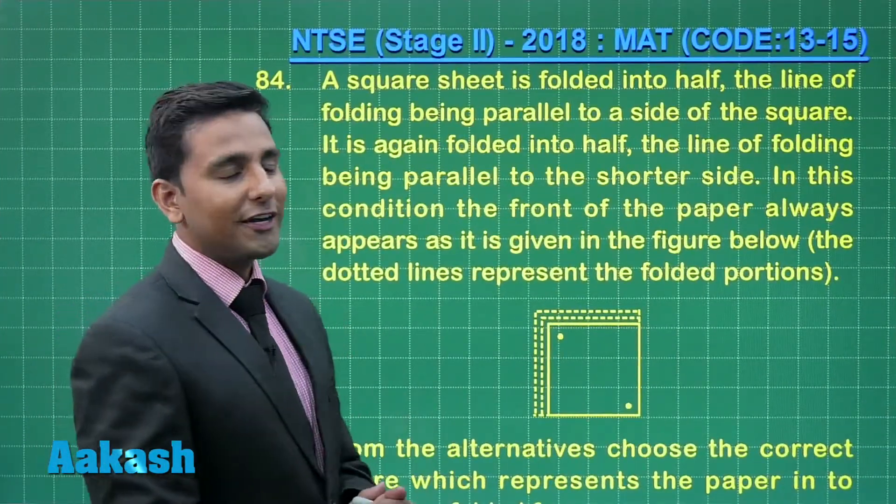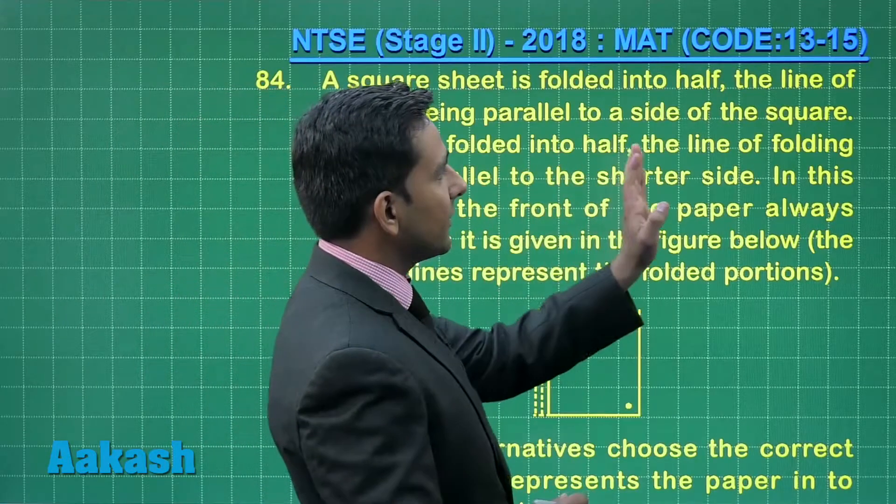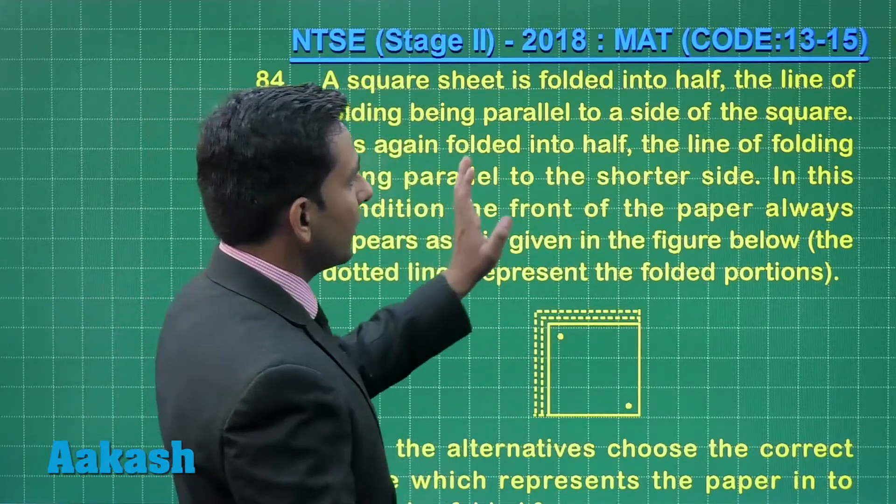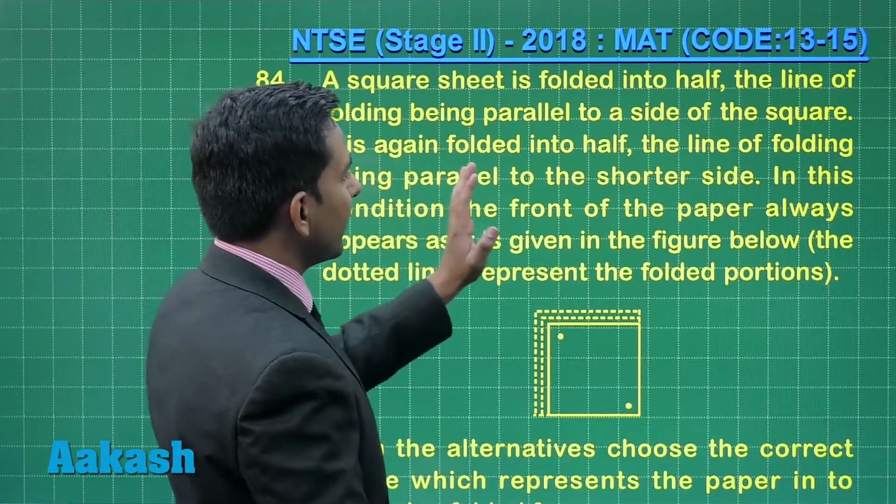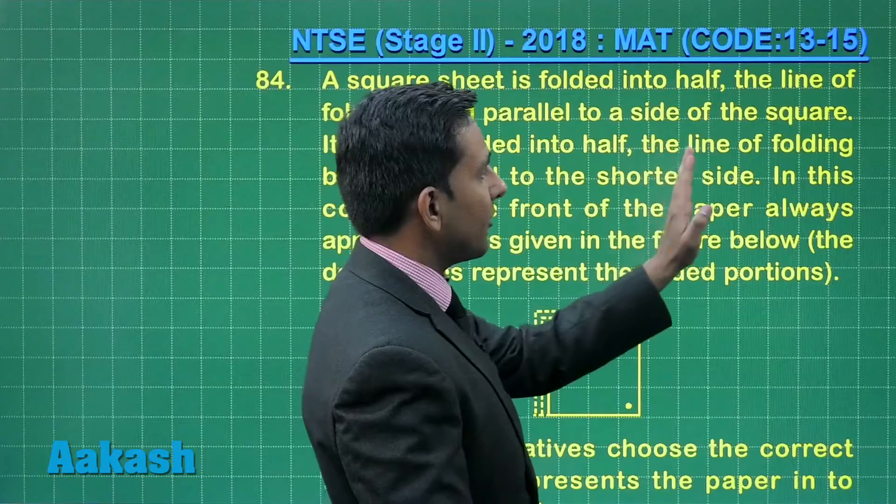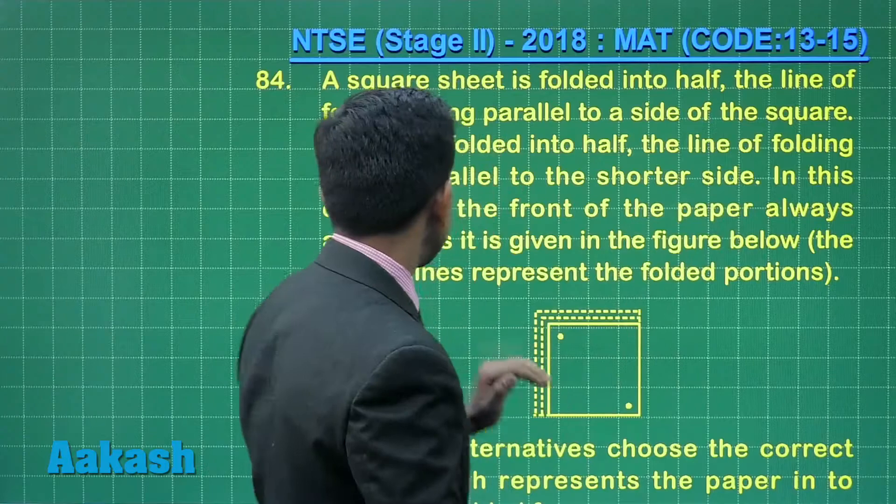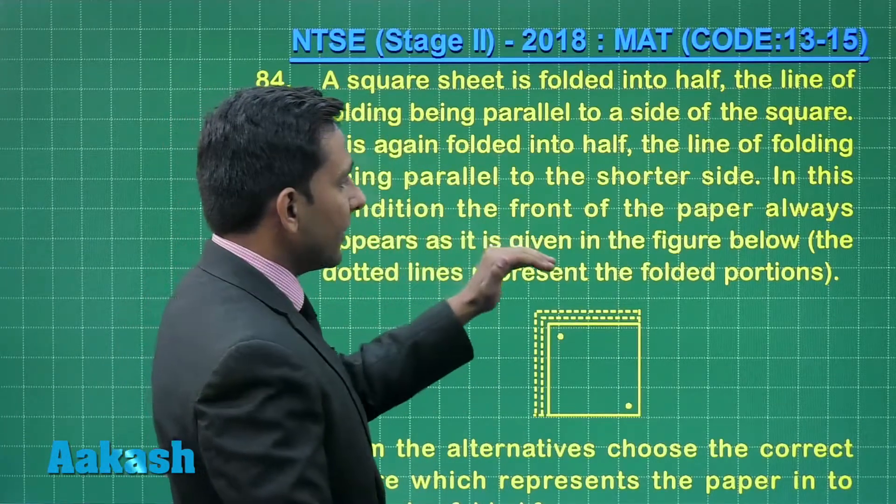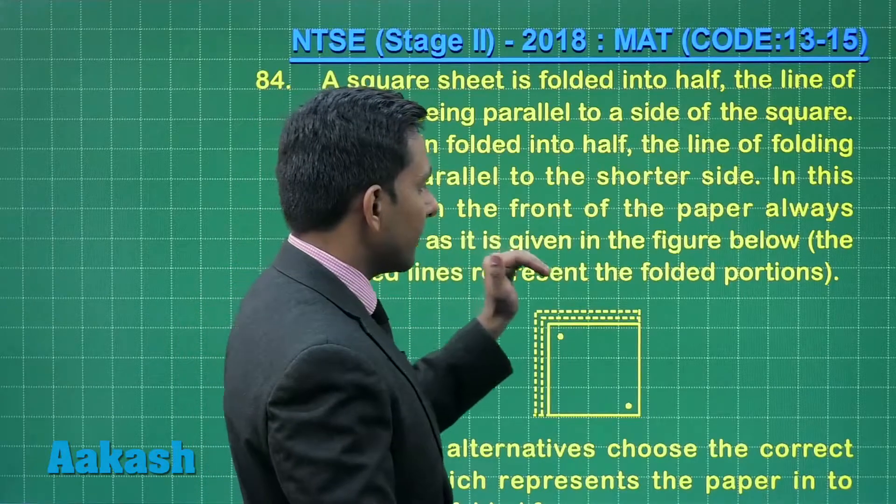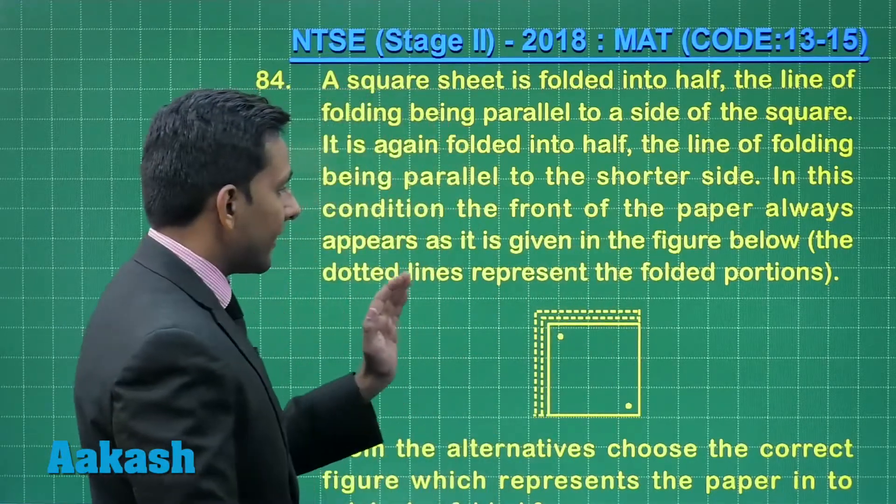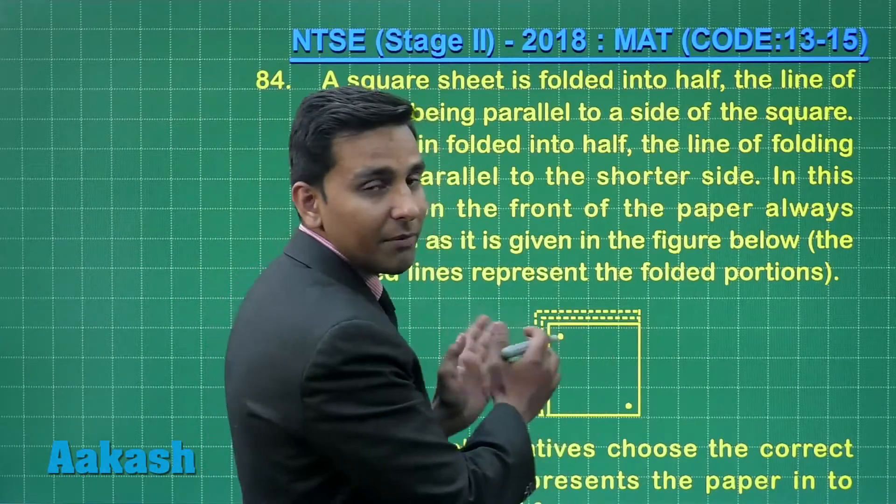Let us discuss question number 84. A square sheet is folded into half, the line of folding being parallel to a side of the square. It is again folded into half, the line of folding being parallel to the shorter side. In this condition the front of the paper always appears as it is given in the figure below. The dotted line represent the folded portion. So here we can see that the folding pattern here.